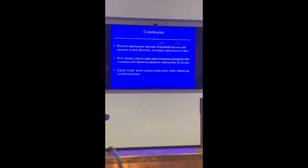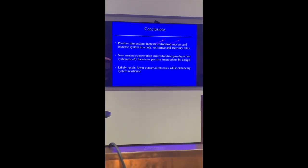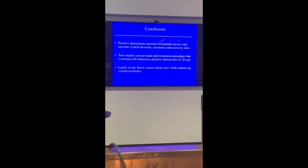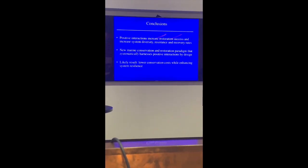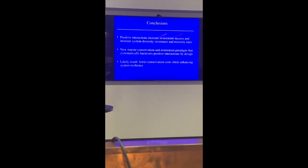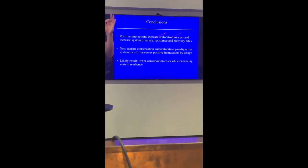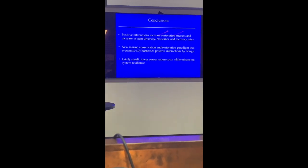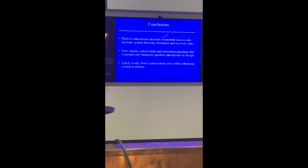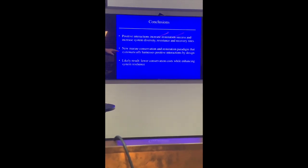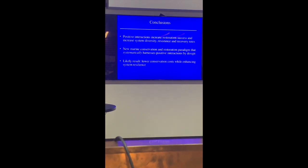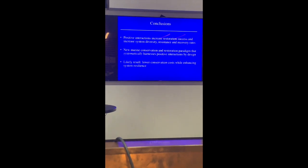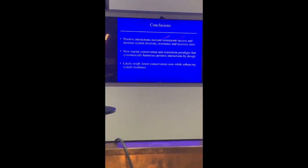So positive interactions can increase restoration success and increase system diversity. They're important in all the systems we study. For marine conservation, we really need to systematically list all the positive species interactions. For coral reefs, we can't just say we have to have parrotfish. Kenny gave a great talk and said these cleaner fish never get talked about in conservation, but have potentially really strong positive effects by affecting the density of herbivores. So we need to systematically look at those. The likely result is that we're going to lower conservation costs while enhancing the system resilience. Hopefully a little optimism that we've untapped efficiency in conservation. Thank you very much.